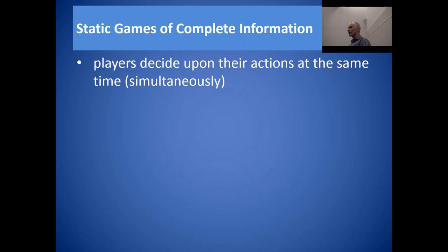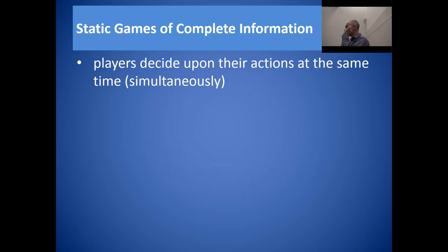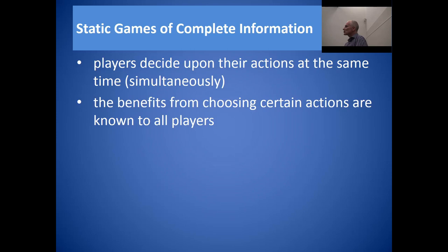The type of game we're going to look at initially will be games where those parties involved — described as the players — choose their actions or decide what they're going to do at the same time. That is, they play the game or choose their actions simultaneously at the same point in time. When players choose what they want to do simultaneously, these are described as static games.